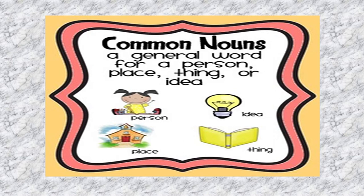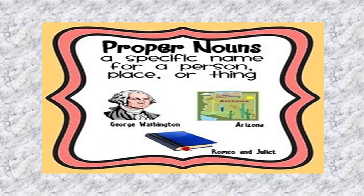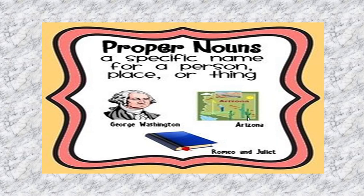Now, children, when I tell you that I am talking about a man, the name of the man is George Washington — that means I have given you a specific name for a person. So when you are using a specific name, then that noun becomes your proper noun. Similarly, let us say we are talking about a place. The name of the place is Arizona. So now we are specifically talking about Arizona, so the word Arizona becomes our proper noun.